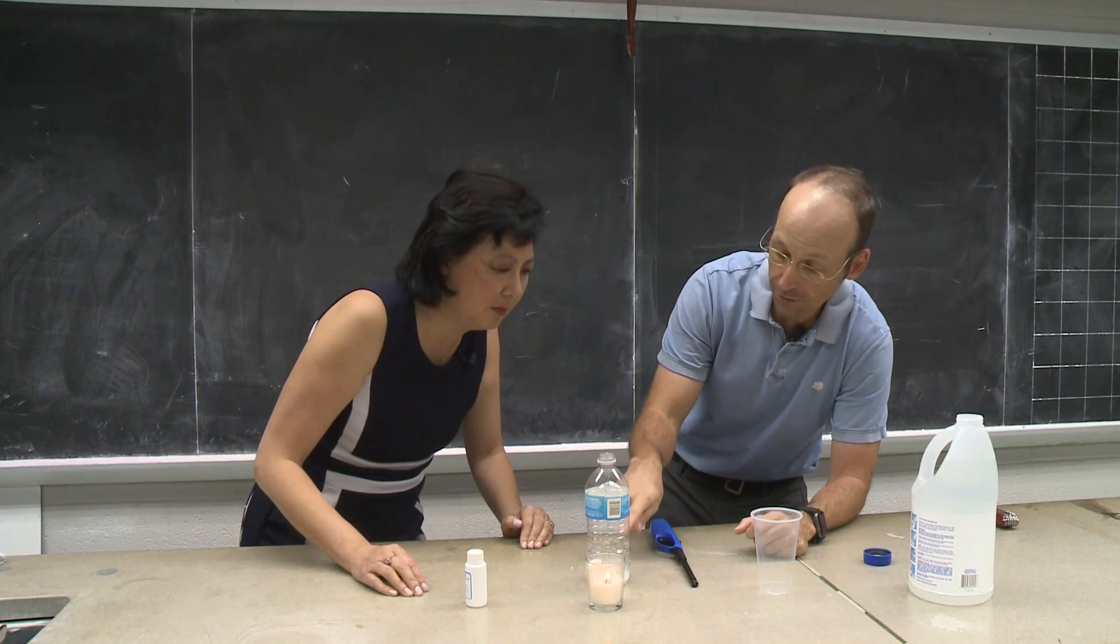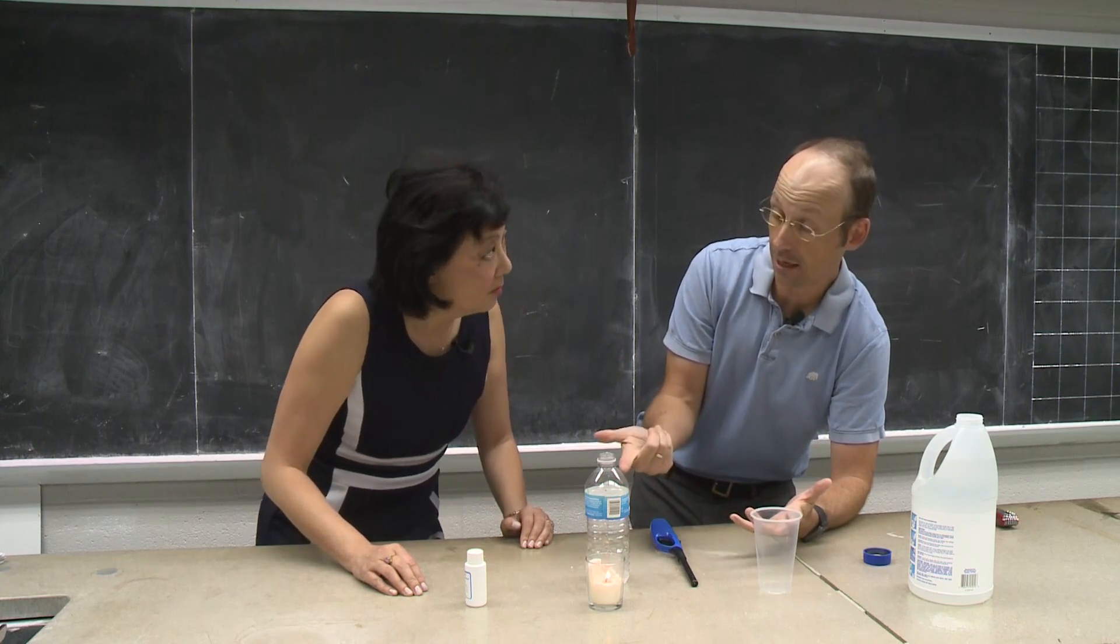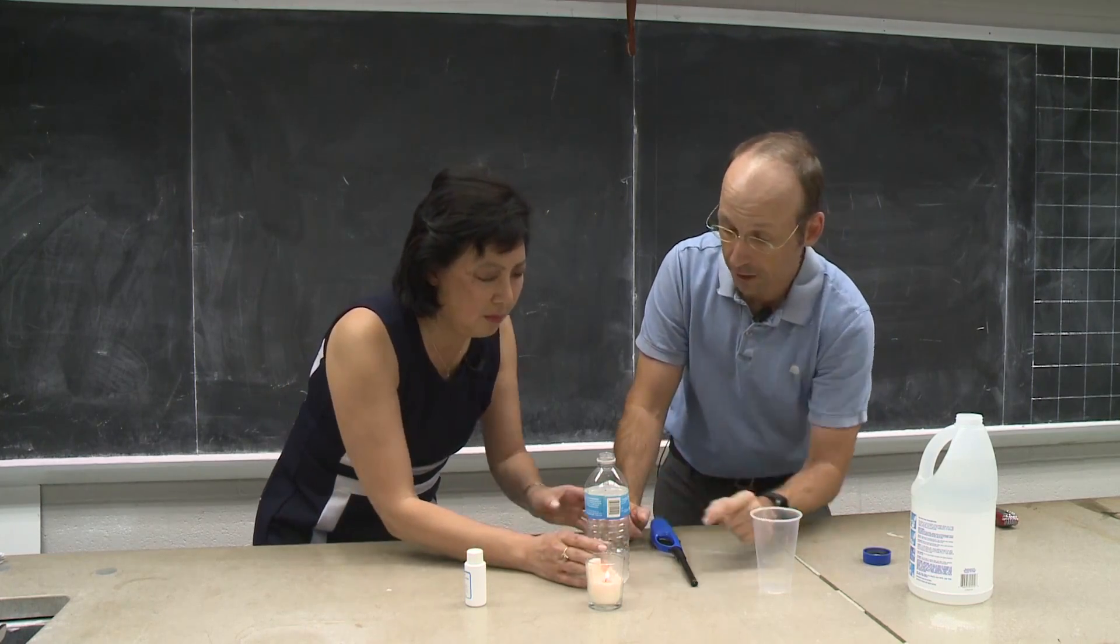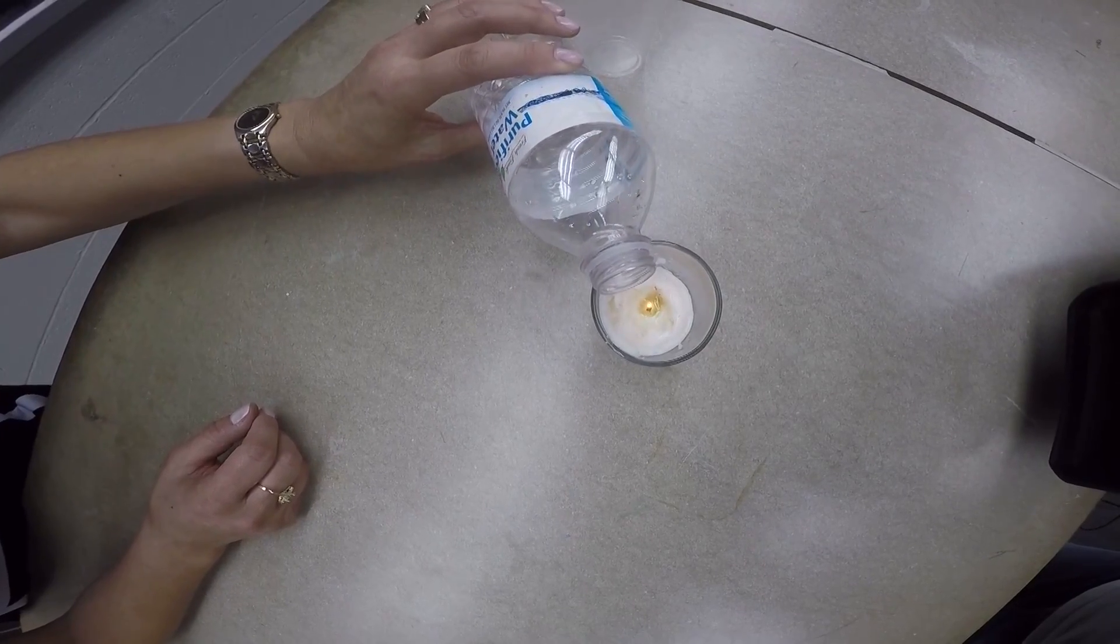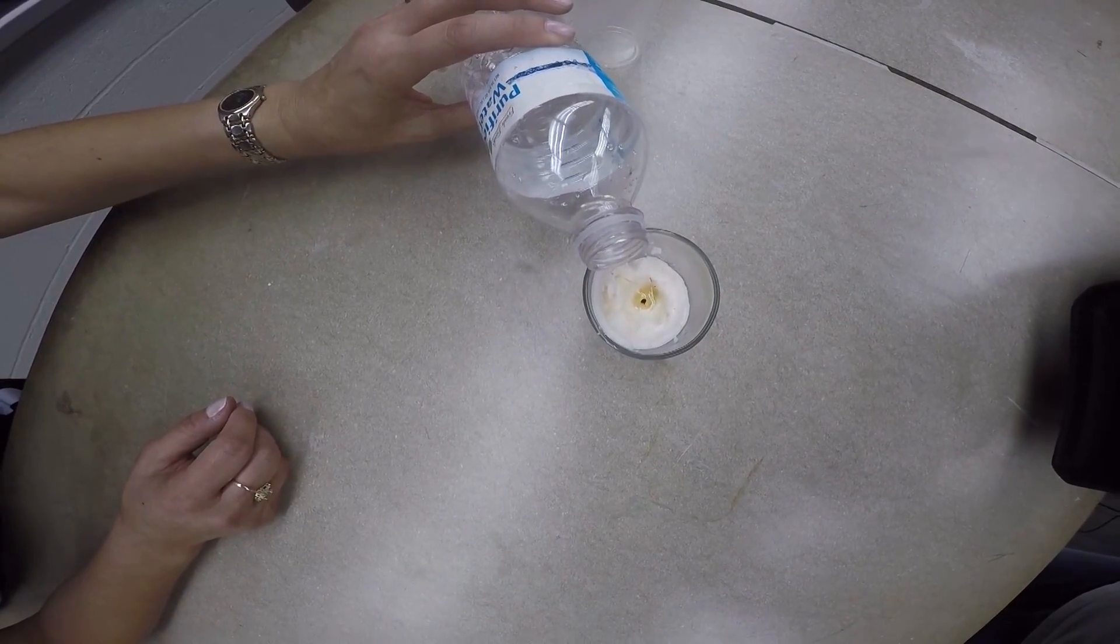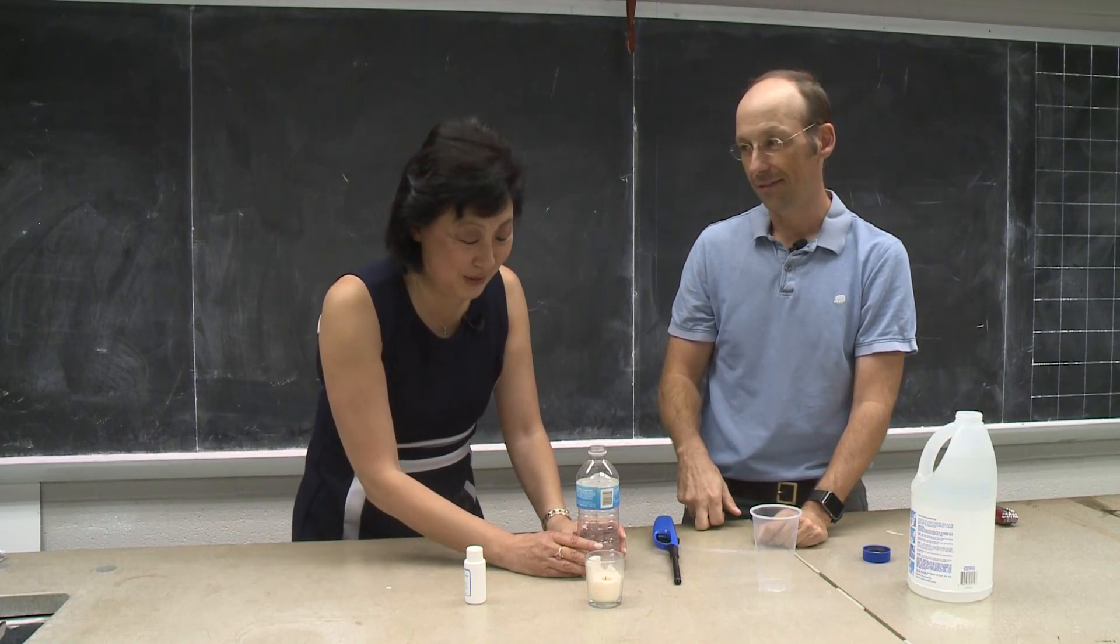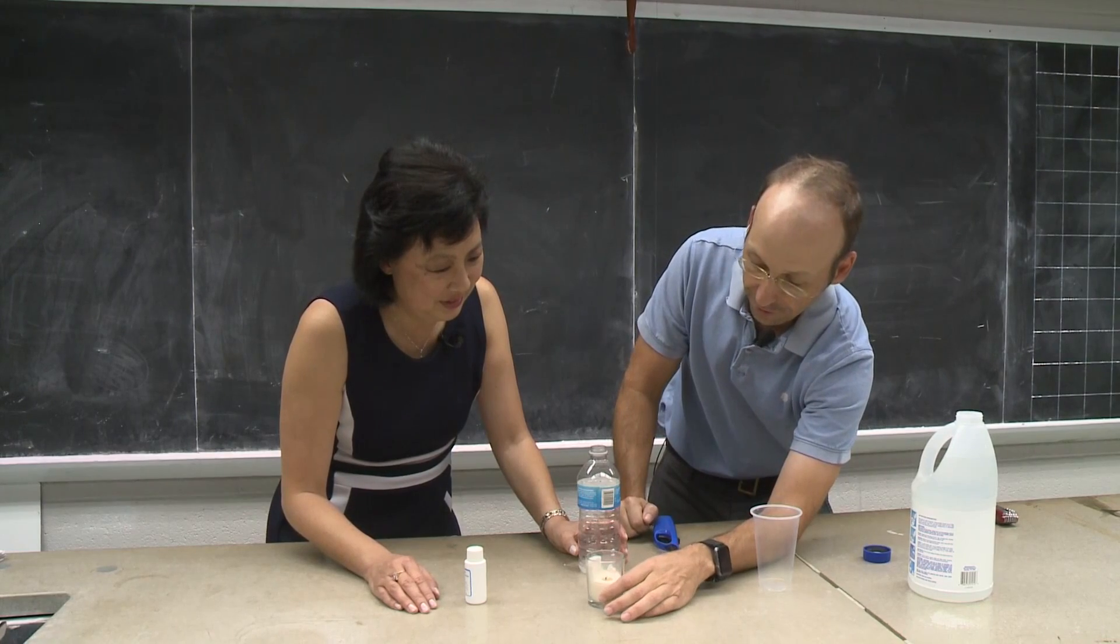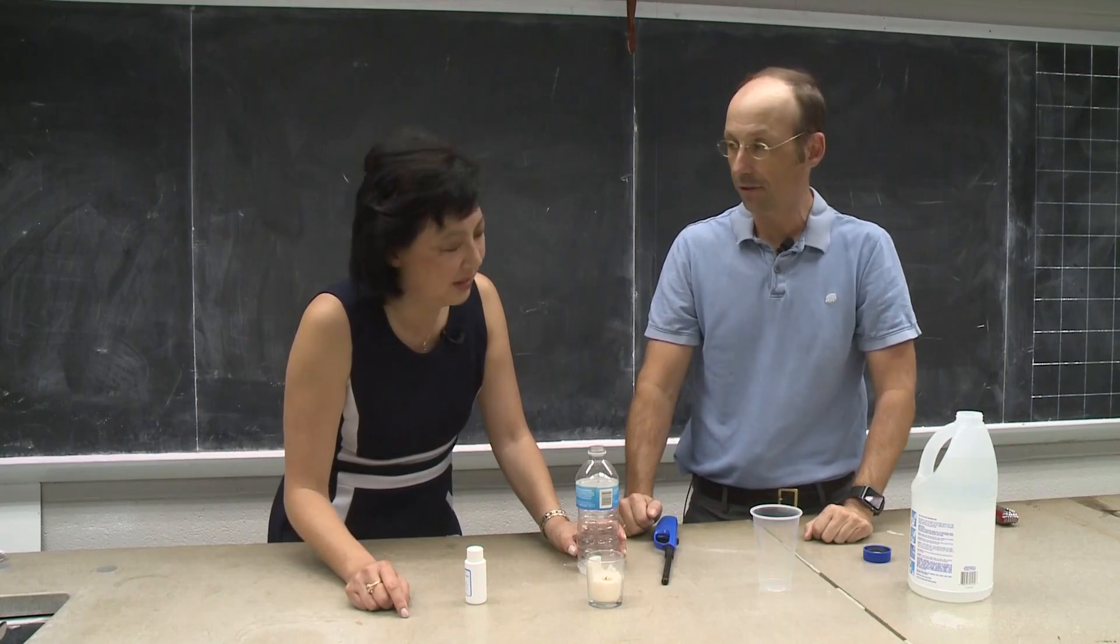That carbon dioxide goes up here and it fills up the bottle. You can't tell because it looks like air but there's carbon dioxide in there. So now take the bottle gently and pretend like there's water but don't pour the water. Just pour the gas on top. A little bit more. That's it. You just extinguish the fire with carbon dioxide.